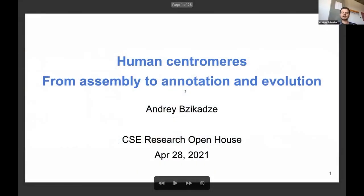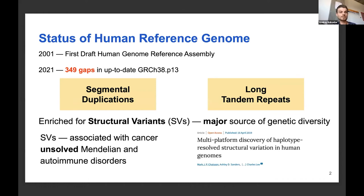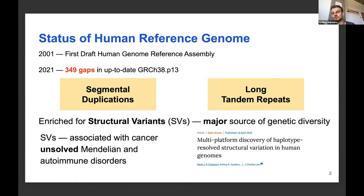I'm a fourth-year student in Paul Pertea's lab and I'm working on human centromeres specifically. Even though the human reference genome was introduced in 2001 and there has been 20 years of progress, there are still gaps in this assembly. Those gaps are largely due to segmental duplications and long tandem repeats, which are known to be enriched for structural variants that are a major source of genetic diversity.